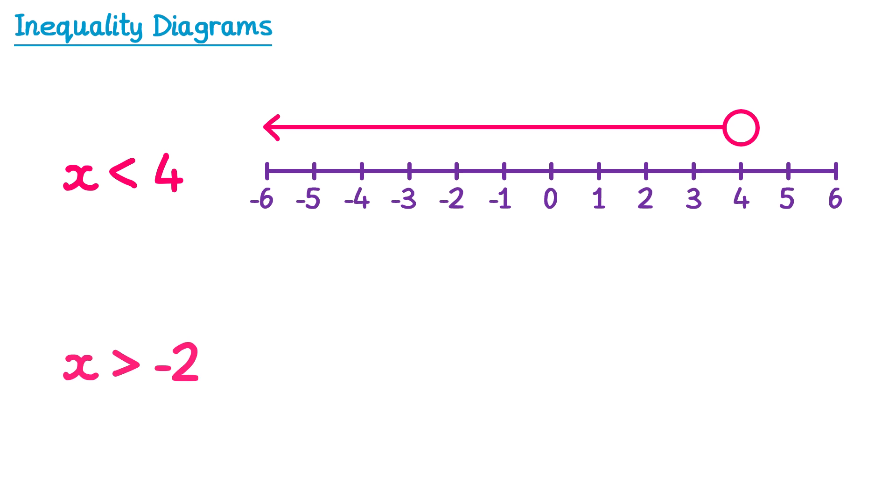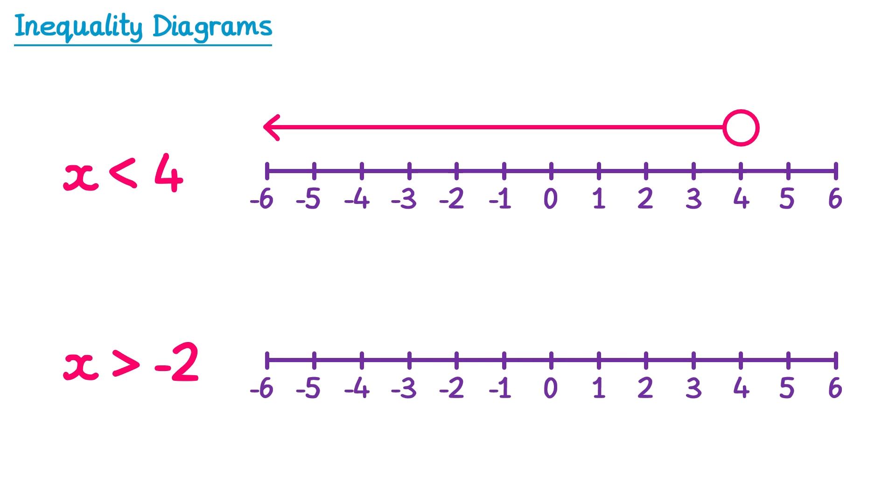Let's try another one. We start by drawing a circle above negative 2, and we need to use an arrow to indicate the numbers that are allowed. This one says x is greater than negative 2, so that's all of the numbers on the right of the circle, so we draw an arrow going to the right, all the way to the end of the number line.